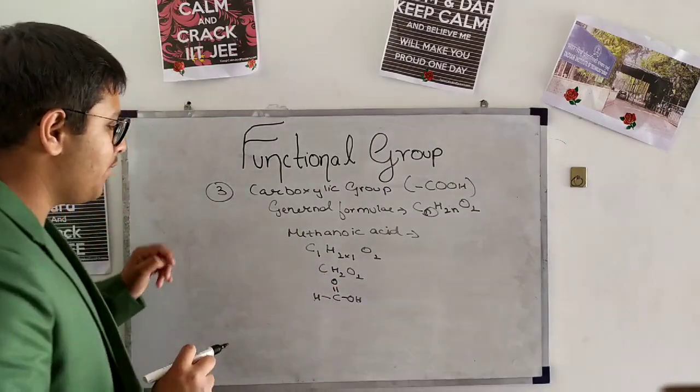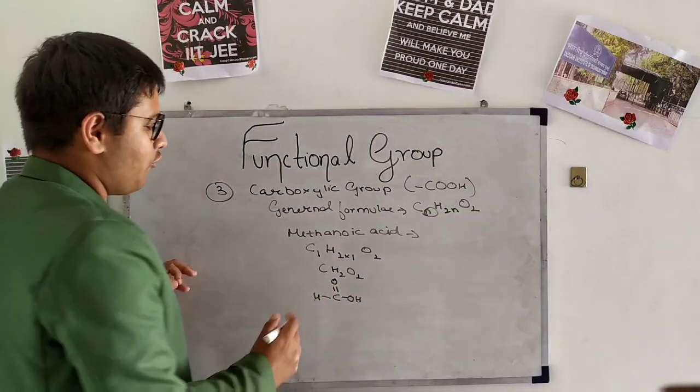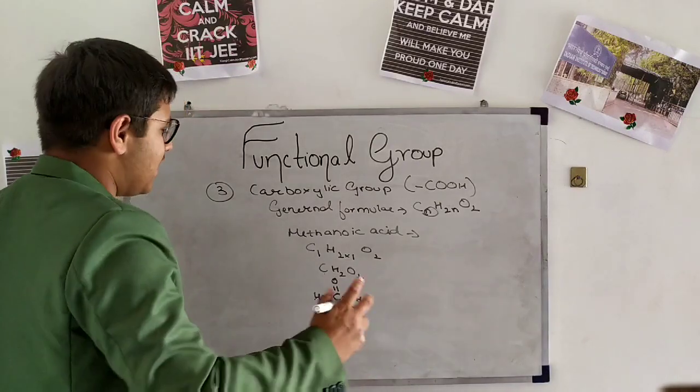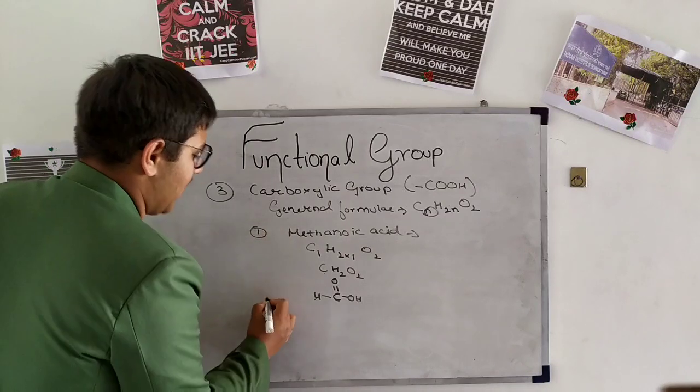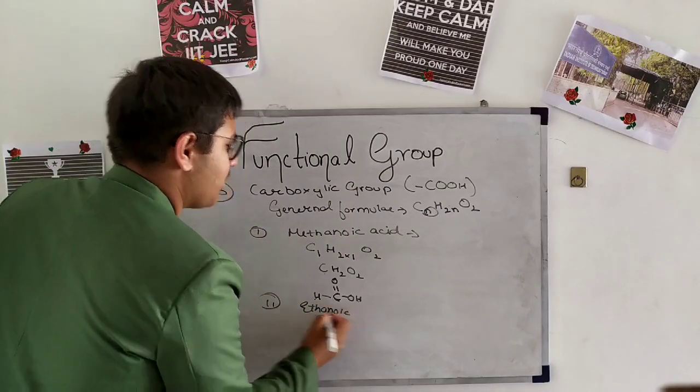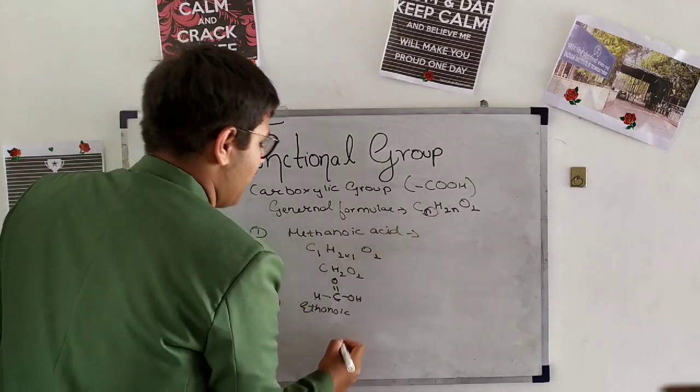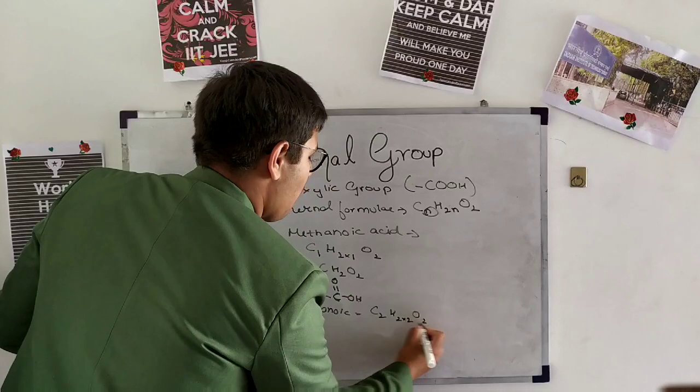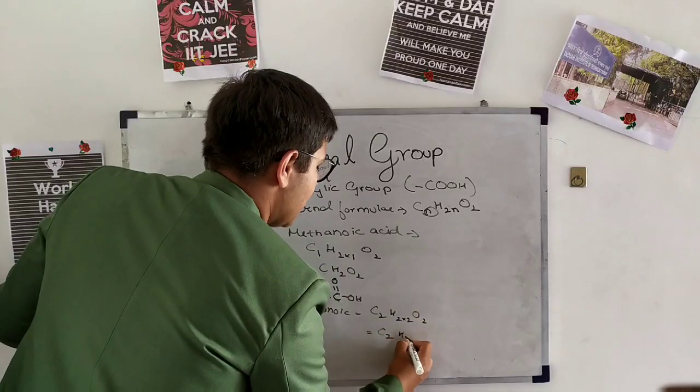At the end of every carbon, so here is only one carbon. Let us take ethanoic acid. In ethanoic acid we will have two carbons, so here at the place of n we will write 2: C2H2 into 2 O2, so it will form C2H4O2.